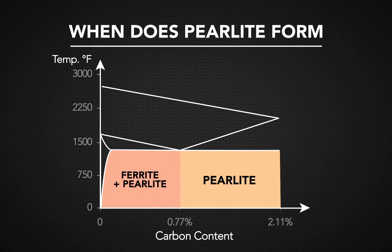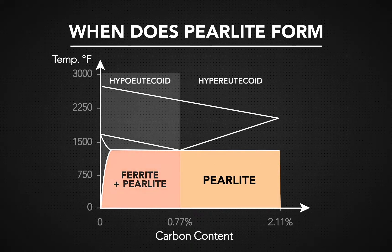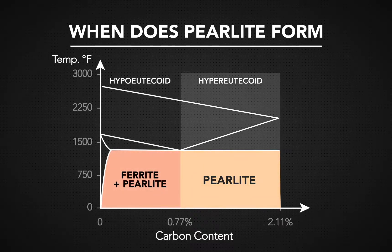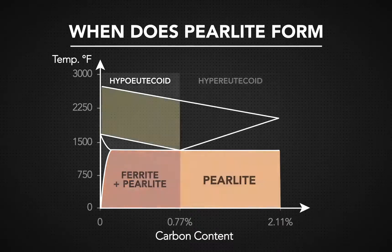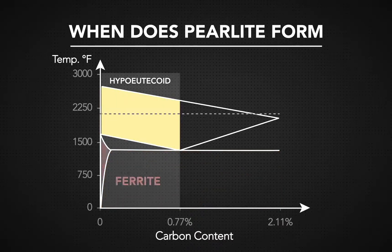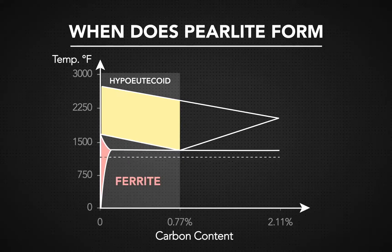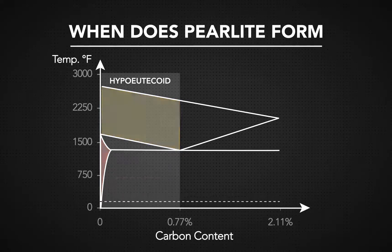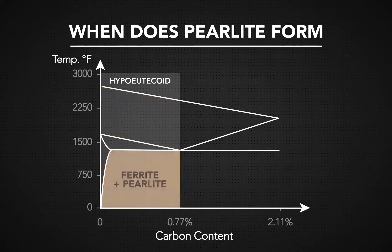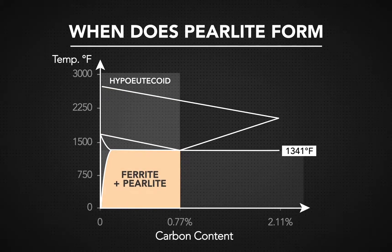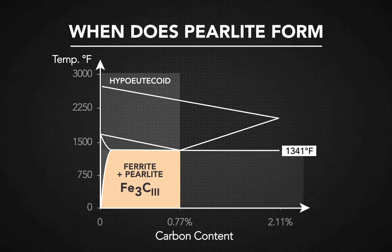Perlite formation occurs differently in hypo-eutectoid and hyper-eutectoid steels. Since hypo-eutectoid steel has less carbon, it forms ferrite first. The rest of the austenite will change to perlite when temperatures are below 1341 degrees Fahrenheit, creating steel with a mix of ferrite and perlite.